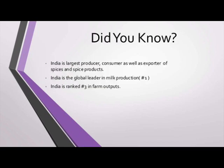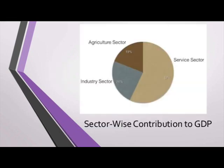Did you know? 1. India is the largest producer, consumer as well as exporter of spices and spice products. 2. India is the global leader in milk production. 3. India is ranked number 3 in farm outputs. Now let us look at sector-wise contribution to GDP.